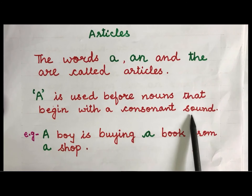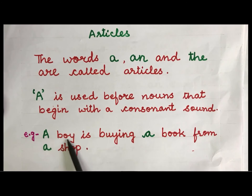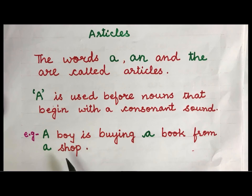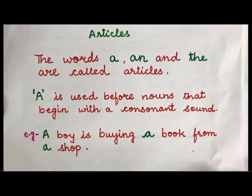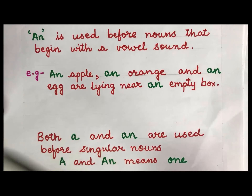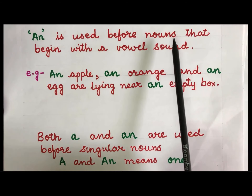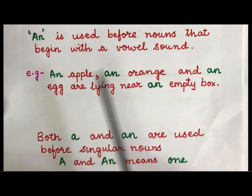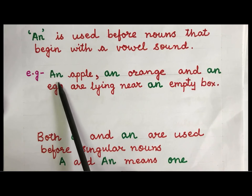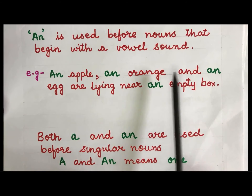For example: a boy is buying a book from a shop. Here the nouns boy, book, and shop are beginning with a consonant sound, and so we have used the article a here. Now an is used before nouns that begin with a vowel sound.